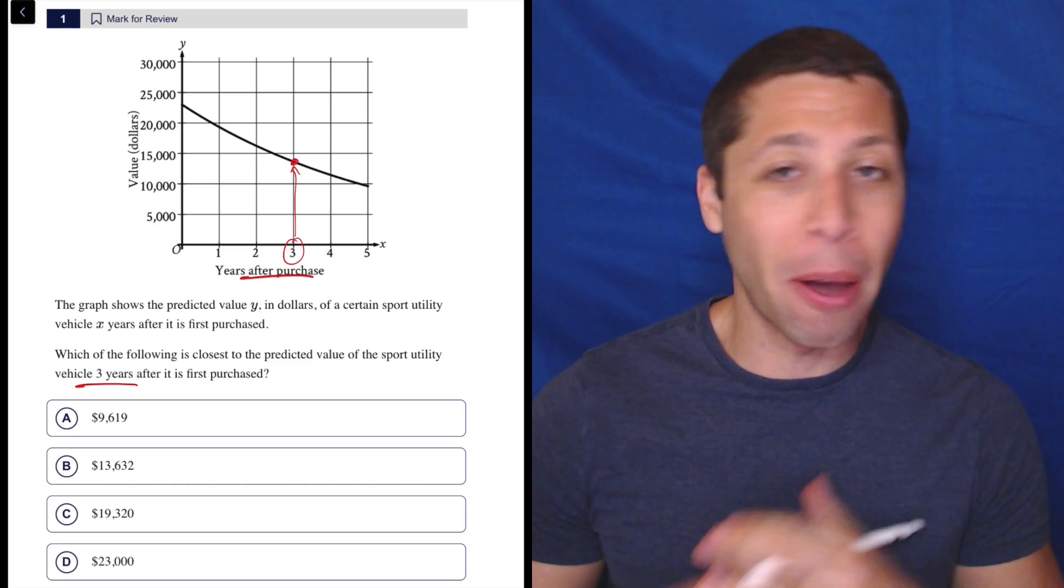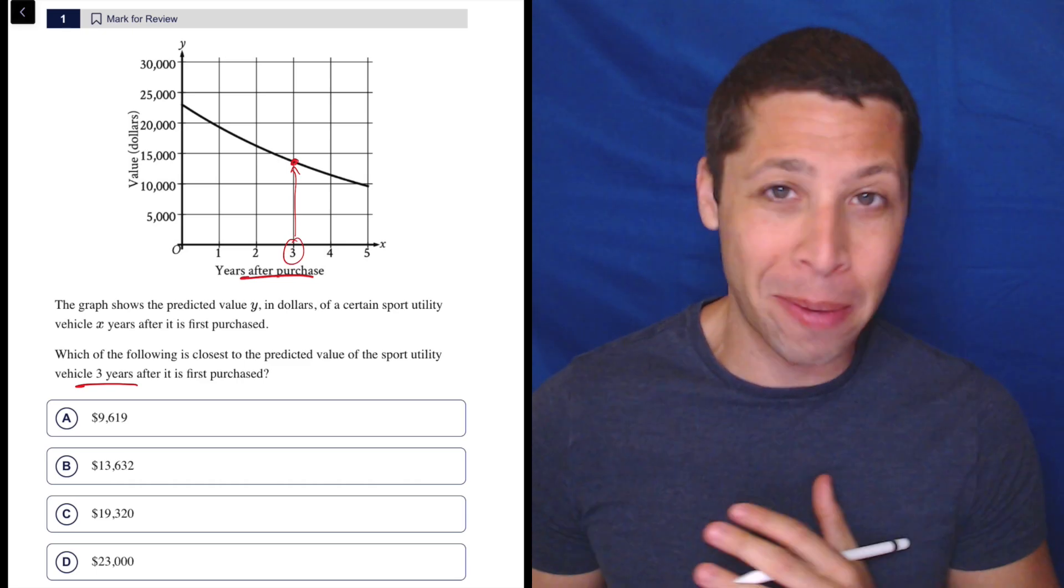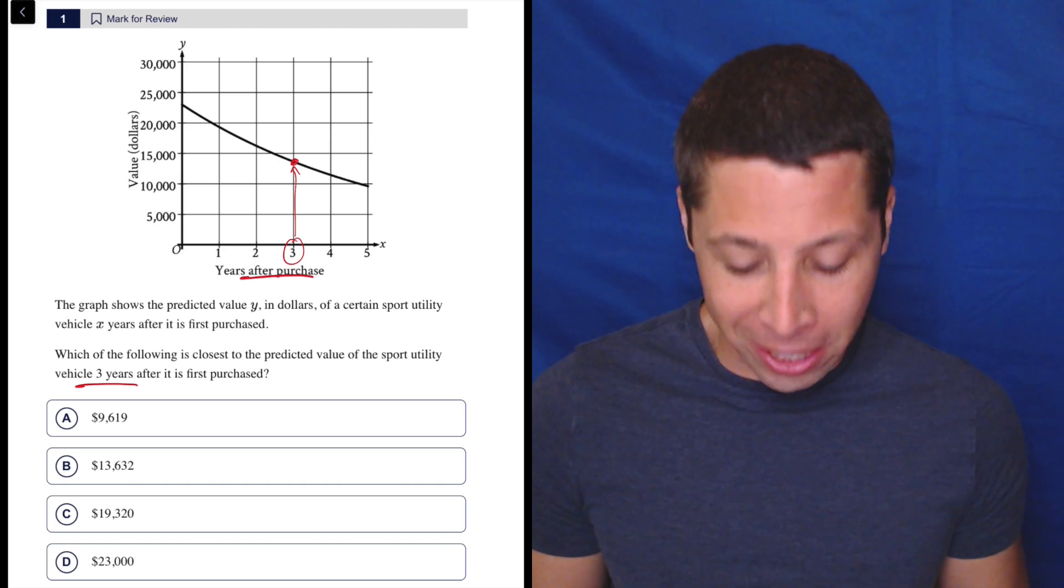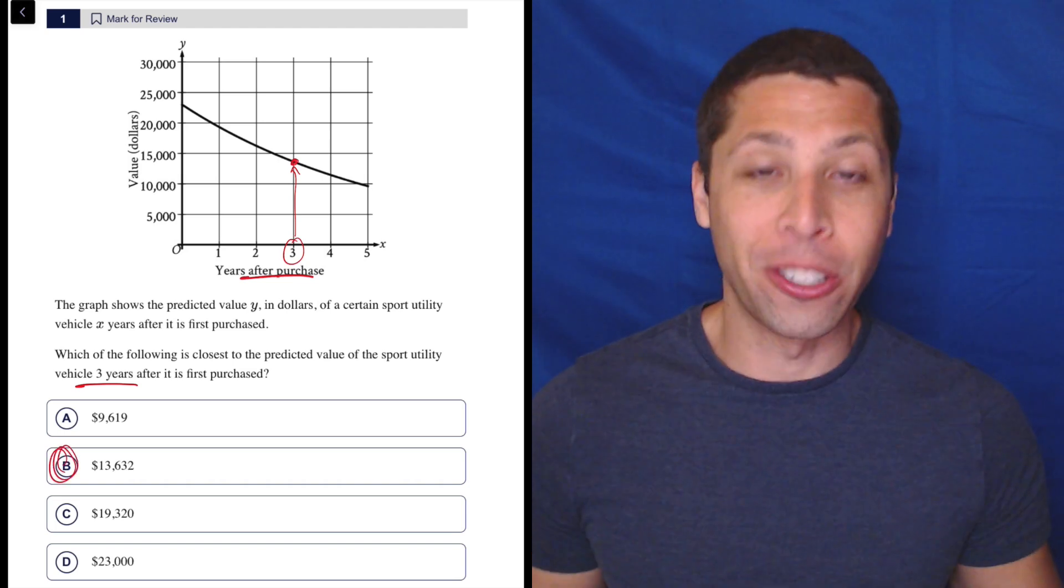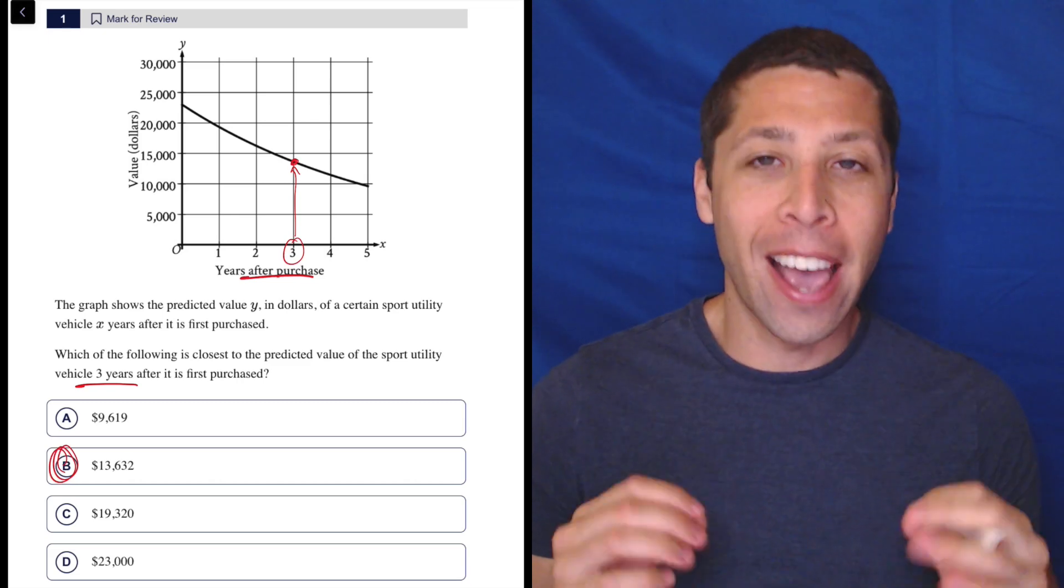And before you panic about rounding and making sure that you estimate correctly, just look at the choices, right? There's only one choice between 10,000 and 15,000. It is choice B, 13,632. And that is the answer.